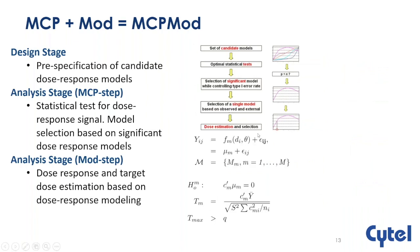Mathematically, we specify M candidate models for the responses. We want to test simultaneously all null hypotheses, and we do that with a t-statistic, which under the null has a central t-distribution, and under the alternative has a non-central t-distribution. The decision is based on the maximum of that t-statistic and an appropriate threshold chosen to control the family-wise error rate.